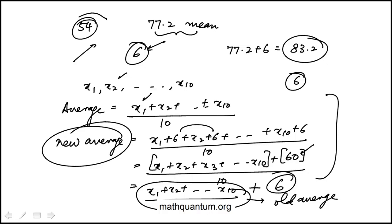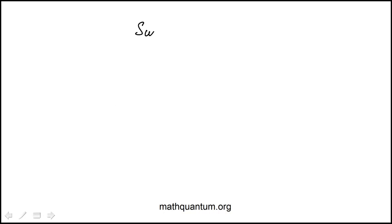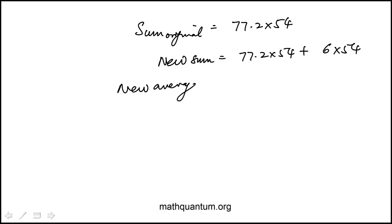You can certainly do it for this specific case, which the way you would do this is our sum, original sum, is the average times the number of students. Now, he adds 6 points to the exam score of every student. So the new sum would be that original plus 6 times 54, because each student you're adding 6. So the new average would be that number, this new sum, divided by 54.